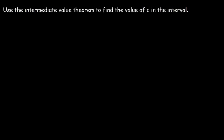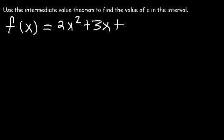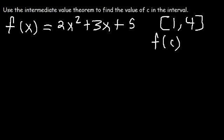Now let's try another example. We want to use the intermediate value theorem to find the value of c in the interval. This time c is not going to be a root — it's not going to be on the x-axis. So let's say f(x) equals 2x squared plus 3x plus 5, and you want to find the value of c in the interval 1 to 4. You're given that f(c) equals 19.